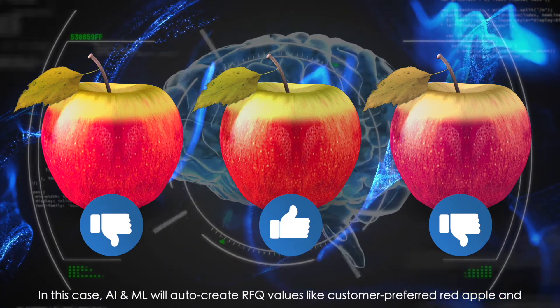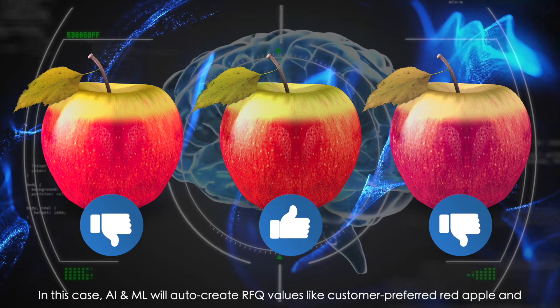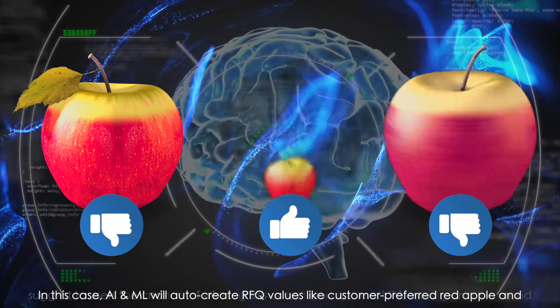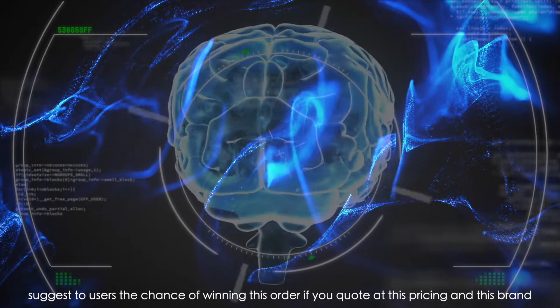In this case, AI and ML will auto-create RFQ values like customer preferred red Apple, and suggest to users the chance of winning this order if you quoted this pricing and this brand.